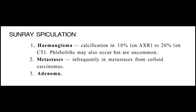Sun rays speculation has a particular radiological pattern — small punctate branching calcifications radiating from the main calcific focus, like sun rays. This can be seen in hemangioma; X-rays and CT may be helpful but you can also pick these calcifications on ultrasound. Sun rays speculation can also be seen in metastatic deposits, particularly colloid carcinomas, and adenoma may also give rise to sun rays speculation. Focus on the size, site, and type of calcification to shape your differential diagnosis.